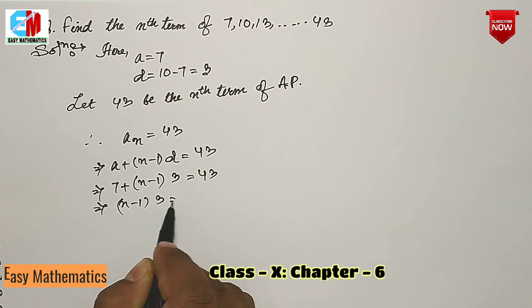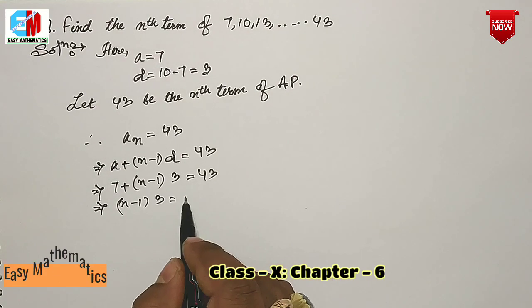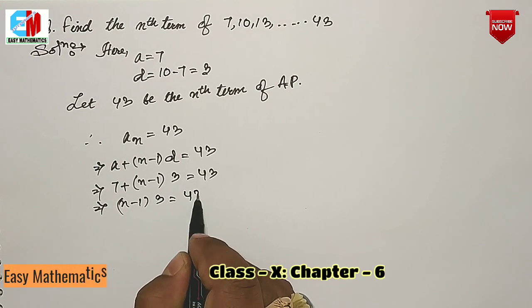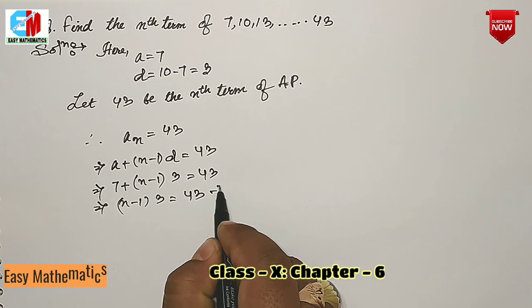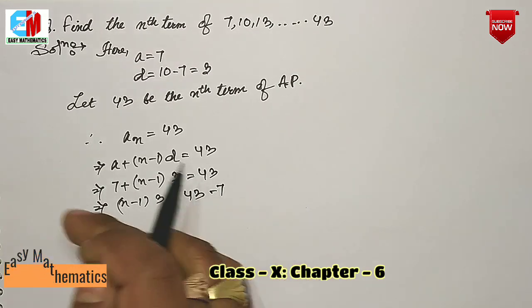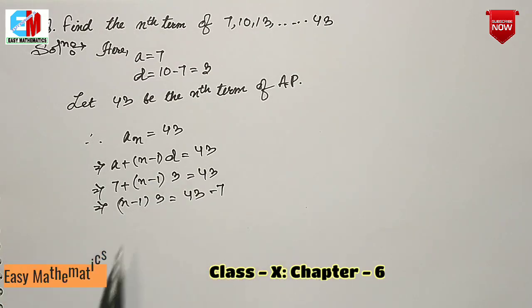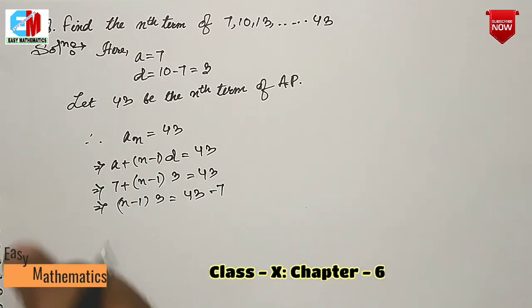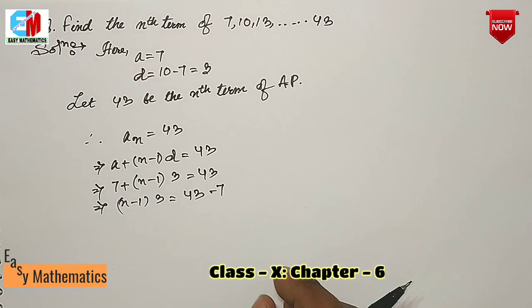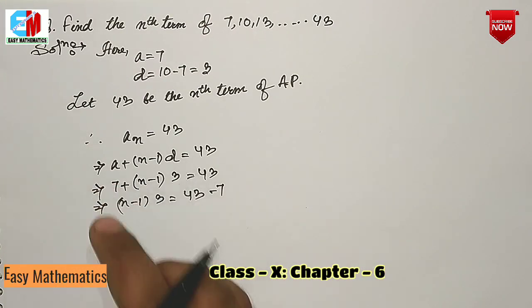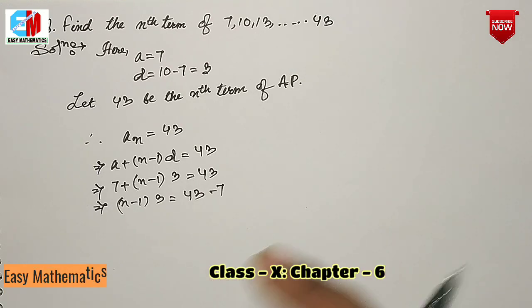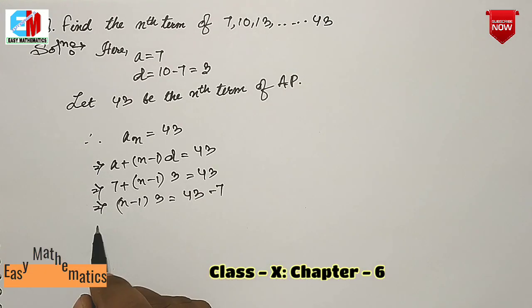If n minus 1 equals 3, then we add 43, and setting the equation: we add minus 7 to isolate the variable and solve for n.